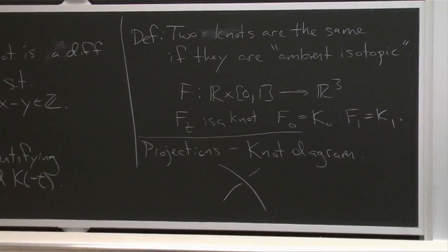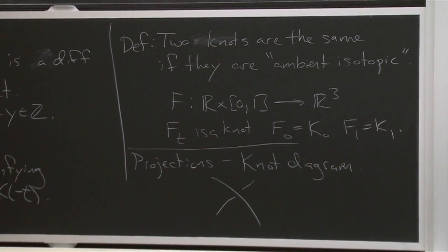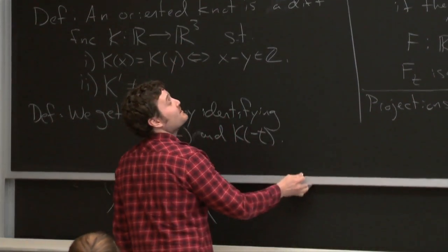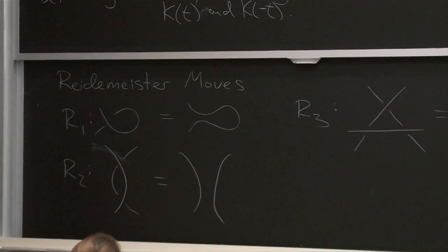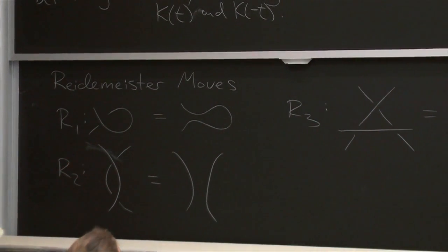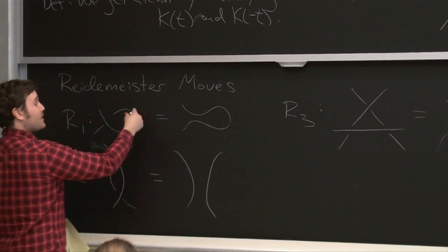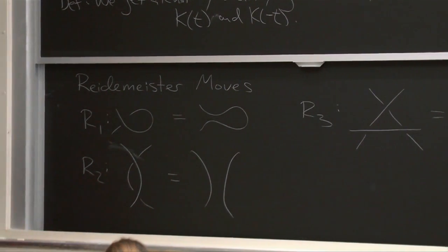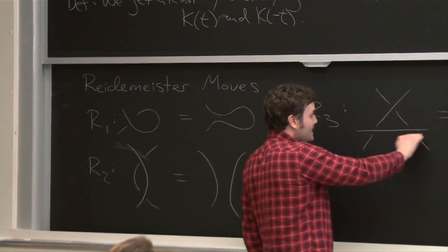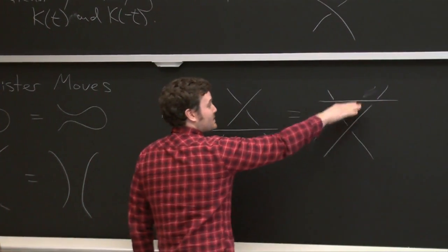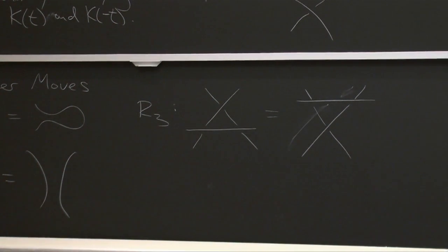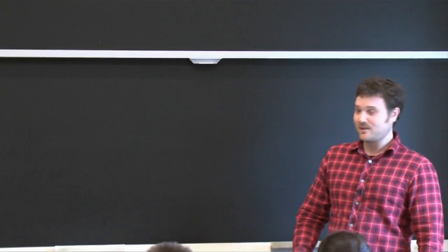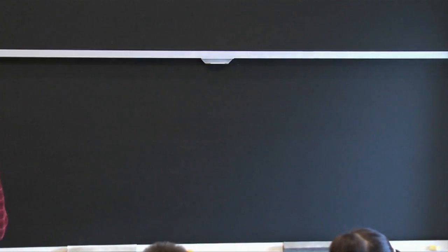Now it's an old theorem of Reidemeister's that two knots are ambient isotopic if and only if, when I draw the two knot diagrams corresponding to those knots, I can get from one to the other via some things called Reidemeister moves that I just happen to have on the board right here. So we have the two knot diagrams and the two knots corresponding to them are ambient isotopic if I can get from one to the other by either unlooping a loop, or passing one part of a loop over another, or by taking a strand and passing it over a crossing. Okay, so that's some history and the definitions. But now I want to get to the stuff that I'm most interested in, the stuff that we really worked on, which is colorability.